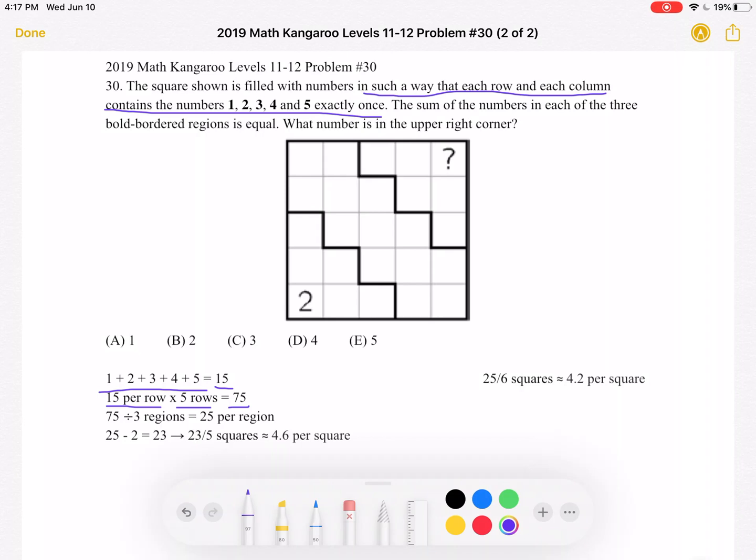We also know that the sum of the numbers in each of the three bold bordered regions is equal, so we have a total sum of 75 divided by three regions, because each region has an equal sum, which would mean a sum of 25 per region.